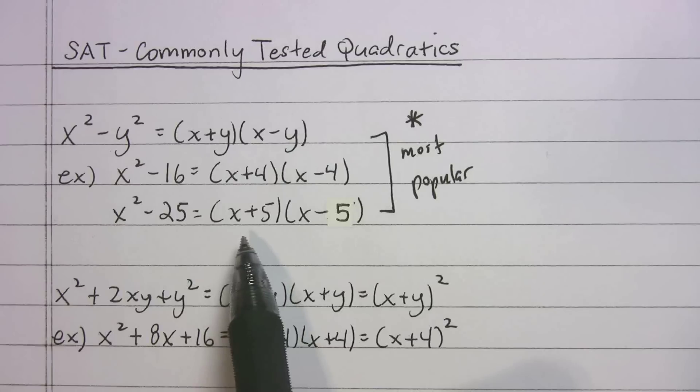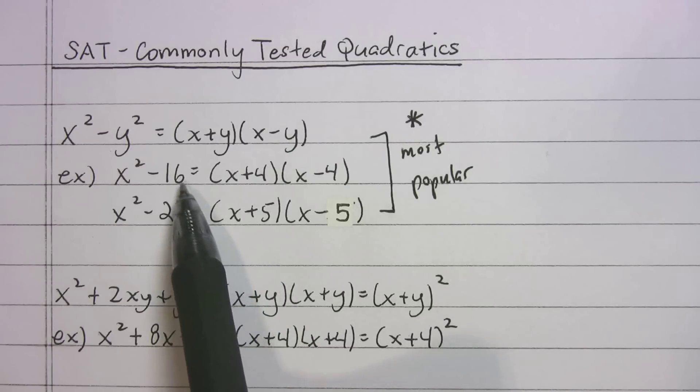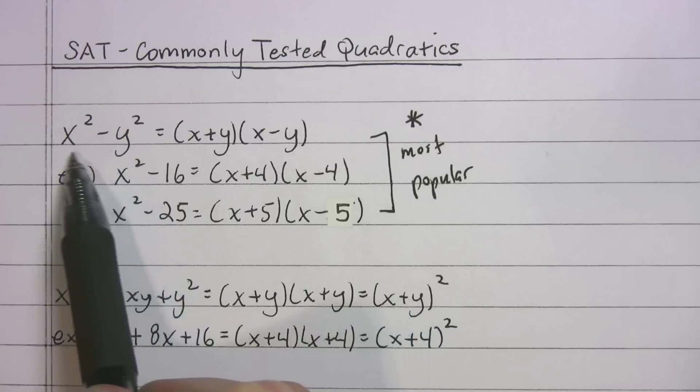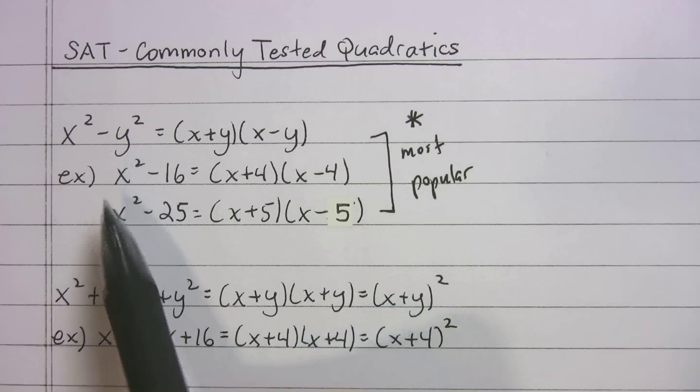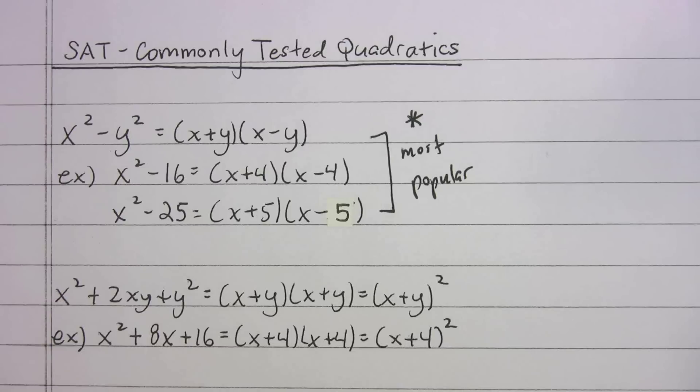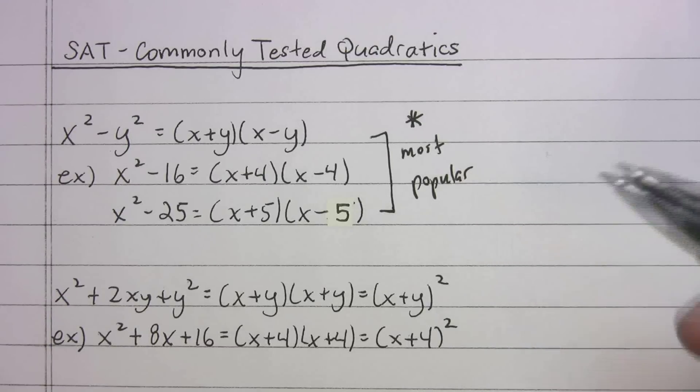Really these occur when you have a perfect square in the second spot. Even though they give you variables here, y squared is a perfect square. It's just y times y. We're going to go into some examples with these in a second, but just be aware that this is the most popular one.